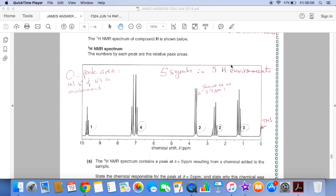You can see I've scribbled a few bits of information on the proton NMR spectrum. So I've just drawn a ring around the numbers. That's the peak area. So that's telling you how many hydrogens are. It's the relative number of hydrogens in the environment. We've got five separate peaks. So there must be five proton environments in molecule H. And I've just reminded myself that this peak here should actually be at 2.7. Obviously that's going to be important when I look at the shift value on the datasheet.